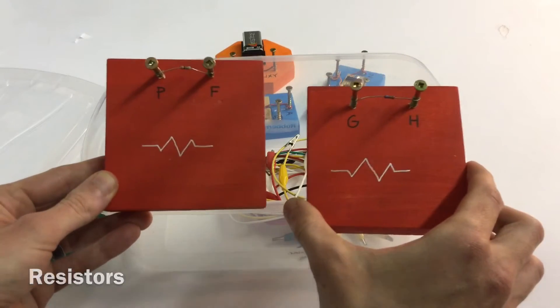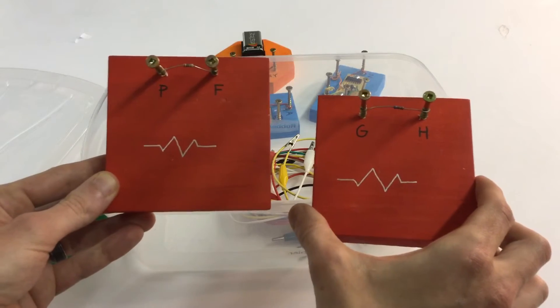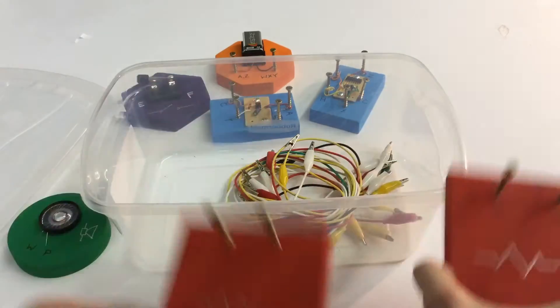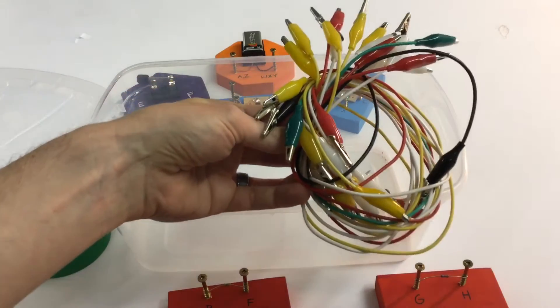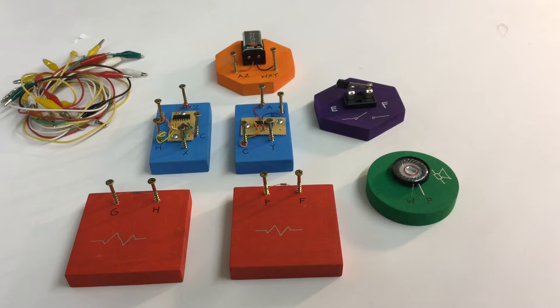These are resistors and really resistors are the most important thing that you'll talk about in this program. Then of course we have a bunch of connector wires, alligator clips. So these are the blocks in the kits.